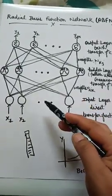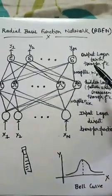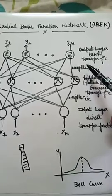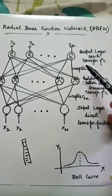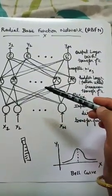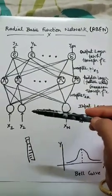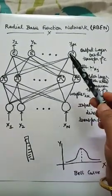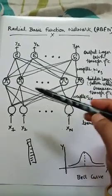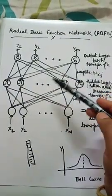Now we arrive at the output layer. This is also known as the transfer function, that means the output of the network consists of a set of nodes, one per category that we are trying to classify. Each output node computes a score for the associated category, like category A, category B, up to category C. Typically a classification decision is made by assigning the input to the category with the highest score.